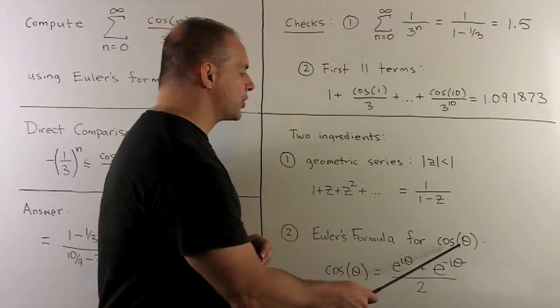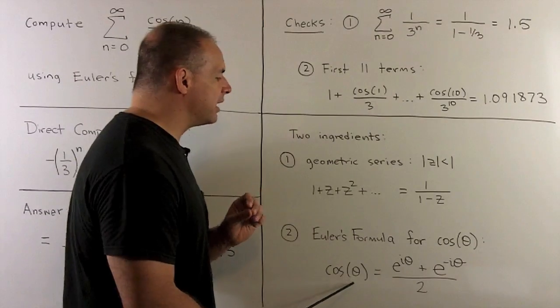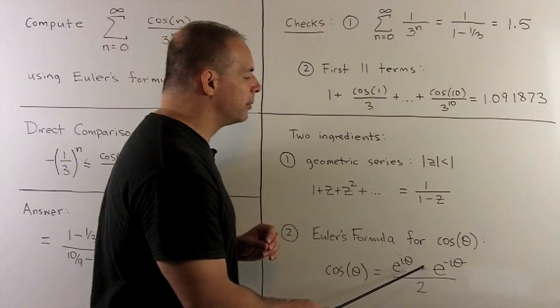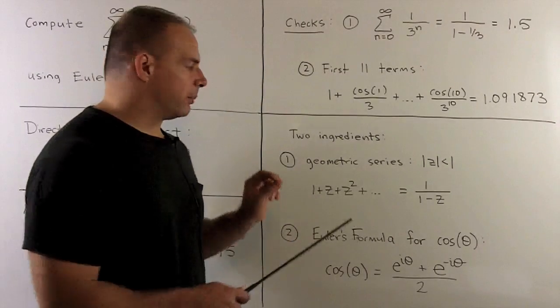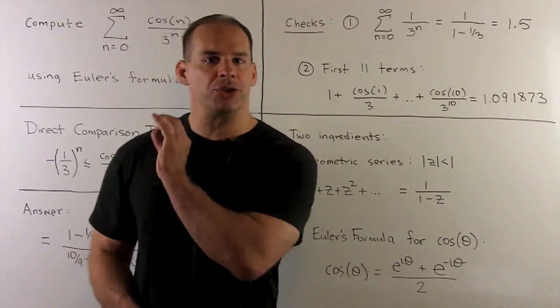For Euler's formula for cosine, we have the cosine of theta is equal to e to the i theta plus e to the minus i theta over 2. So we're going to take both of these and apply them to the terms in our series.